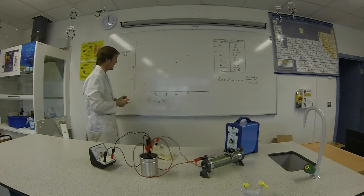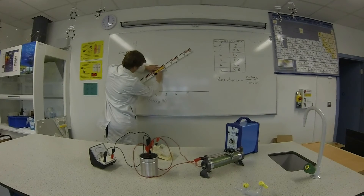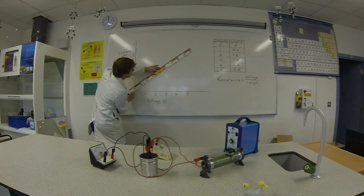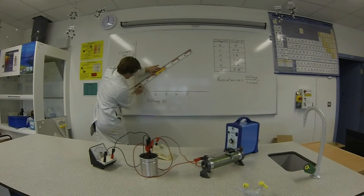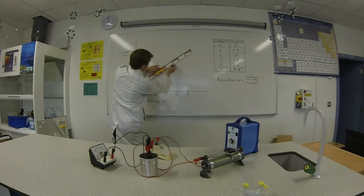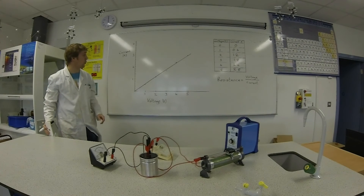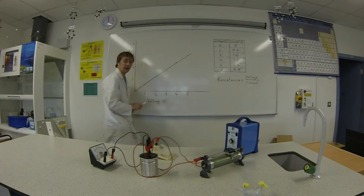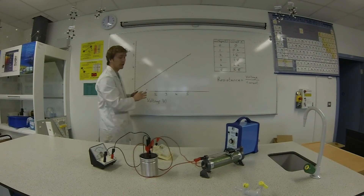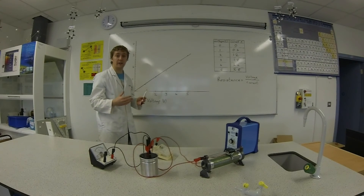Now we'll join these dots with a line. And you can see that they pretty much form a straight line through the origin. These two points were maybe slightly off. A straight line through the origin shows a proportional relationship between current and voltage.